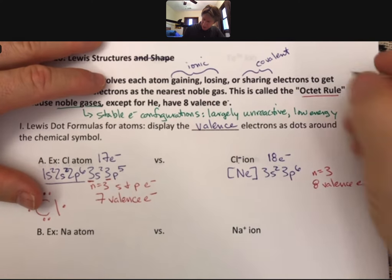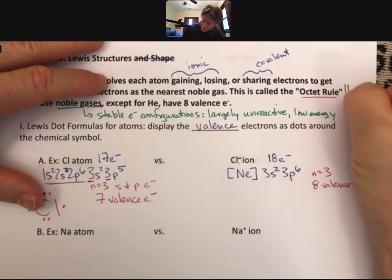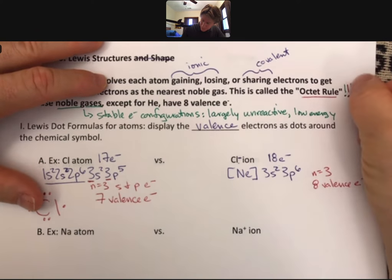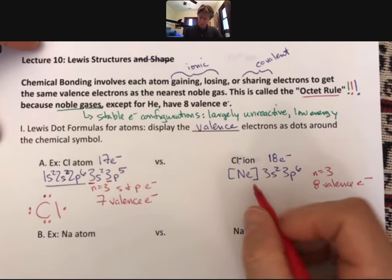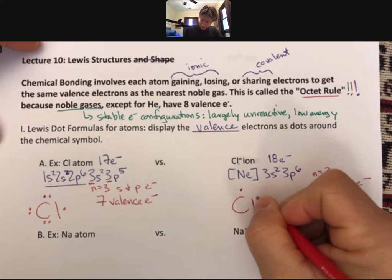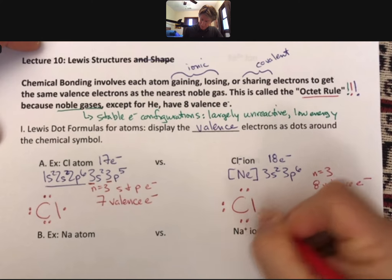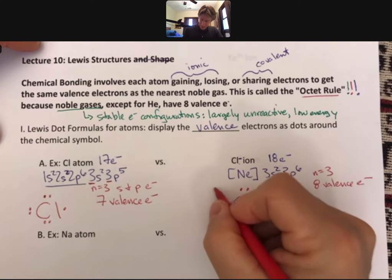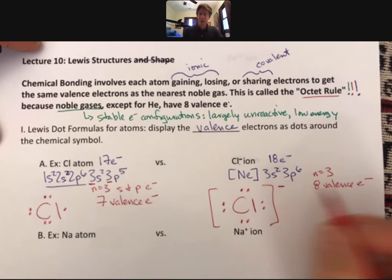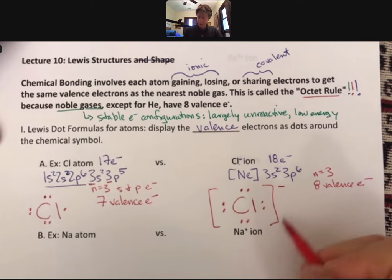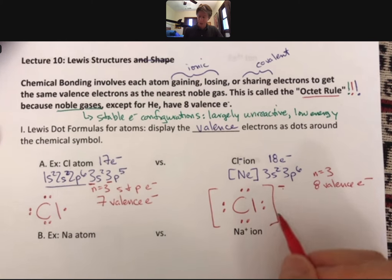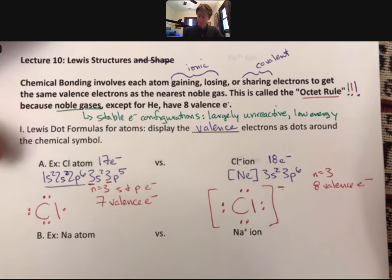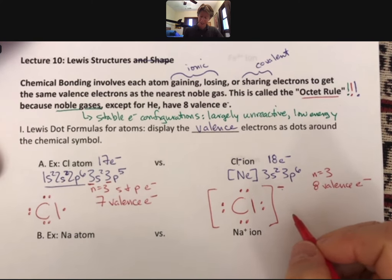Let's do the Lewis dot formula for the chloride ion. It will have 8 dots. It has to have square brackets and a minus sign. The square brackets and the minus sign means that that's our way of saying that somewhere in here there's one more electron. We have to show the charge on that species, that ion.